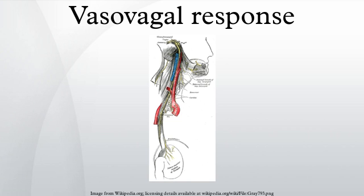In patients with recurrent vasovagal syncope, diagnostic accuracy can often be improved with one of the following tests: a tilt-table test, implantation of an insertable loop recorder, a Holter monitor or event monitor, an echocardiogram, or an electrophysiology study.